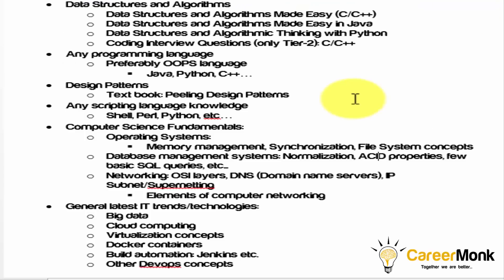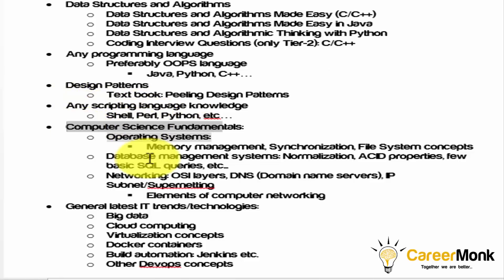To recap this session: for tier 1 and tier 2 companies, focus on data structures and algorithms, any OOP programming language including design patterns, scripting language knowledge, computer science fundamentals, and general latest IT trends and technologies. We also discussed book preparation tips, interview tips, and whether to participate in online coding competitions. Prepare all these topics and all the best with your tier 1 and tier 2 interviews.